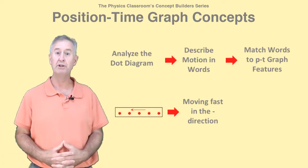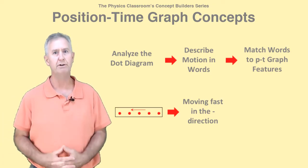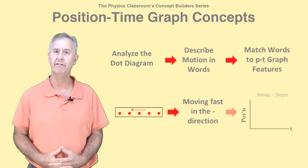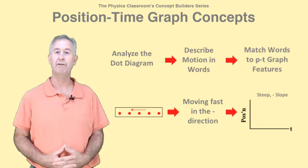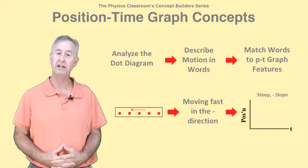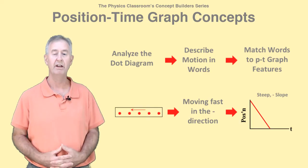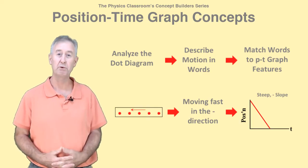This dot diagram shows an object moving left or in the negative direction and very, very fast. So the PT graph would show a line that has negative slope for moving left and be very steep for moving fast.